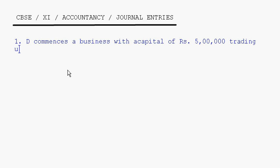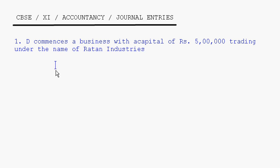Trading under the name of Ratan Industries. D commences a business with a capital of rupees 5 lakhs. D is the proprietor of this firm. So he is bringing in capital of rupees 5 lakhs, meaning he is bringing cash and that will become his capital.